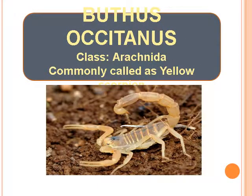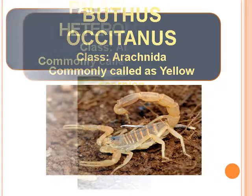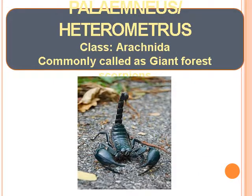Buthus Occitanus — Class Arachnida, commonly called as Yellow Scorpion. Palamnaeus Heterometrus — Class Arachnida, commonly called as Giant Forest Scorpion.